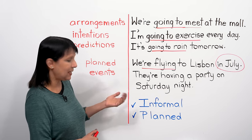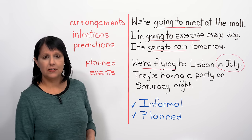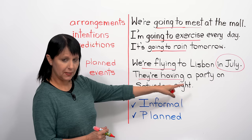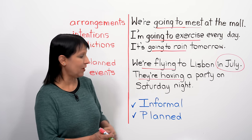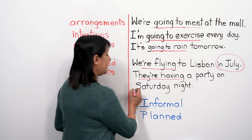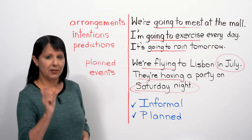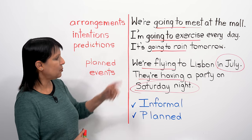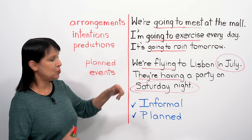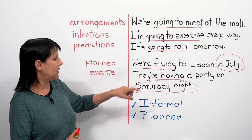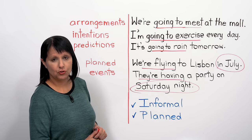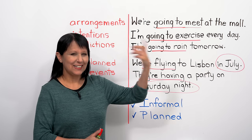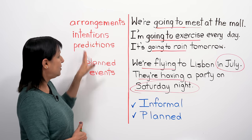Here's another example of a planned event: 'They're having a party on Saturday night.' We have 'they're having' — we can use 'have' in the continuous form to talk about an event — and then 'on Saturday night' as our time marker to indicate it's happening in the future. Remember, we can flip these around: I could say 'We're going to fly to Lisbon in July,' or 'We're meeting at the mall tomorrow' using present continuous — but I'll need to add a time expression.